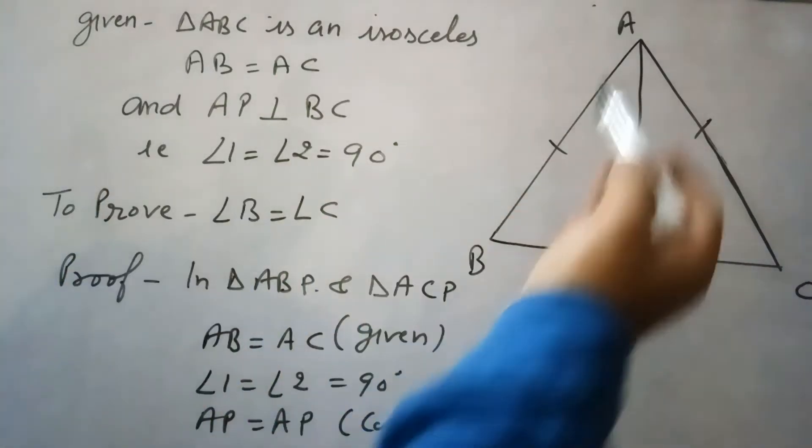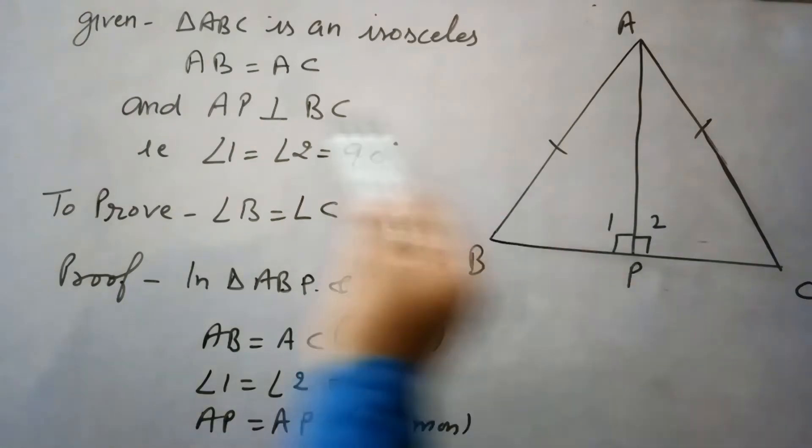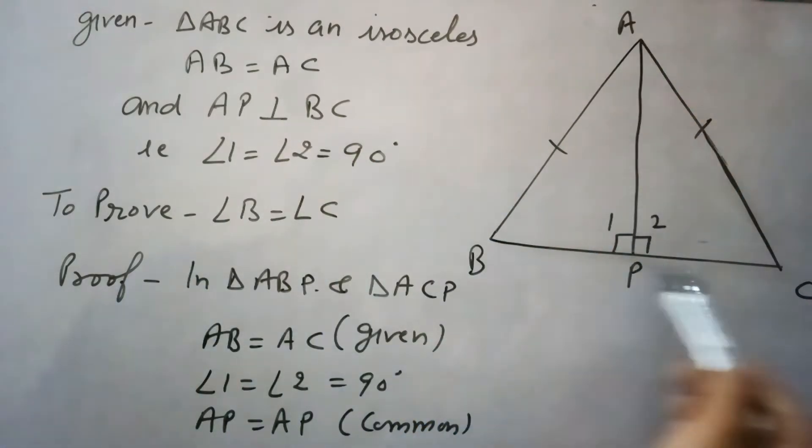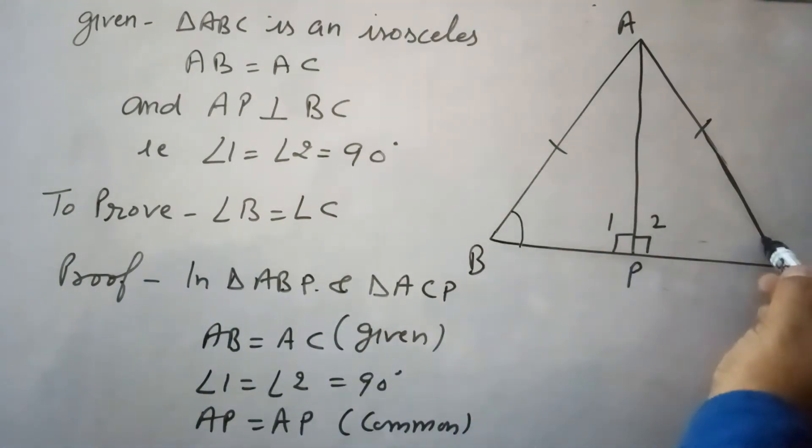In this question it is given that triangle ABC is an isosceles triangle where AB equals AC, and AP is perpendicular to BC. This means if this is perpendicular, then angle 1 equals angle 2, and we need to prove that angle B equals angle C.